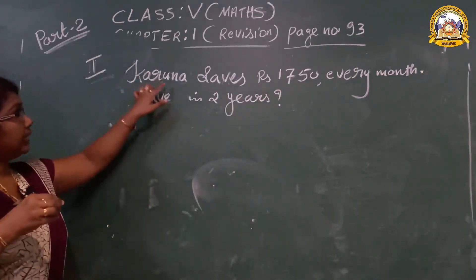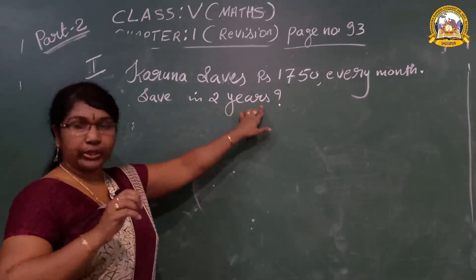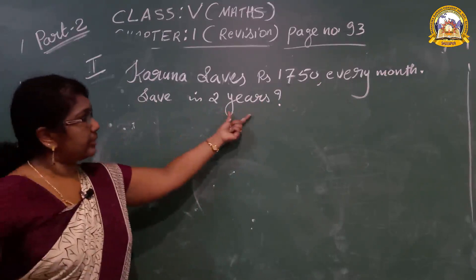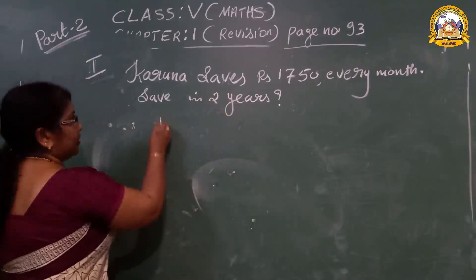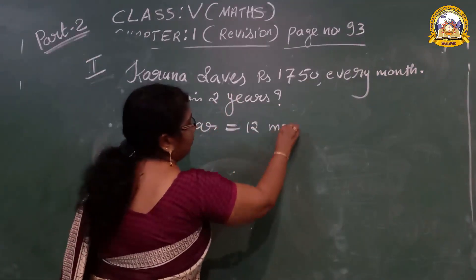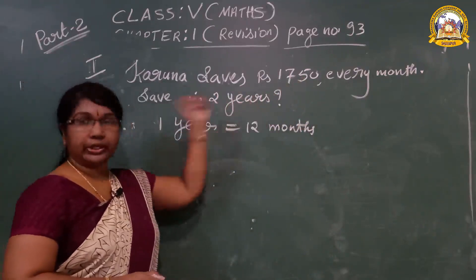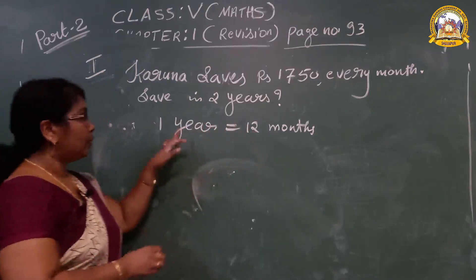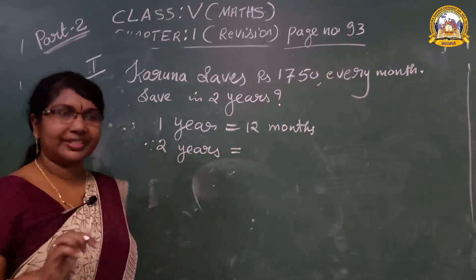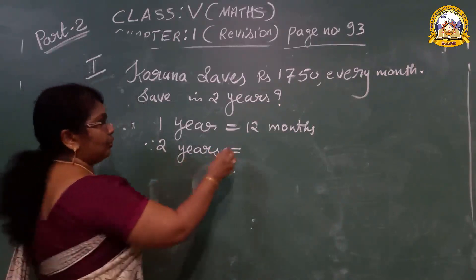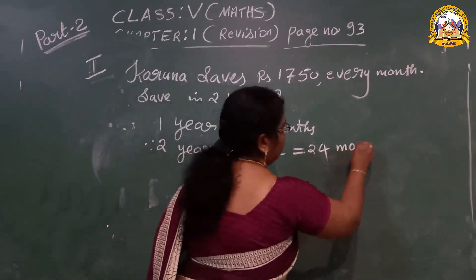Read the question once more. Kairuna saves ₹1,750 every month. How much will she save in two years? Here the answer is asked in years but the saving is given in months. One year equals 12 months. Why are we converting to months? Because she saves 1,750 in one month, and we have to find the answer for two years. So two years = 12 × 2 = 24 months.